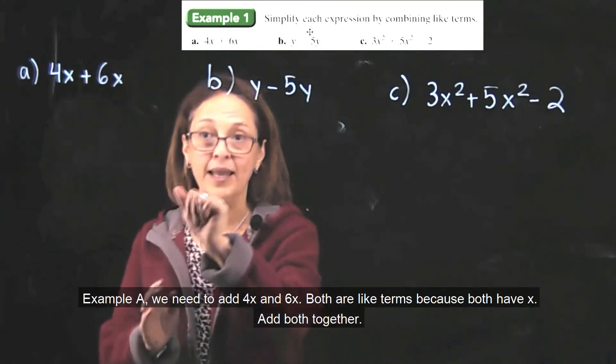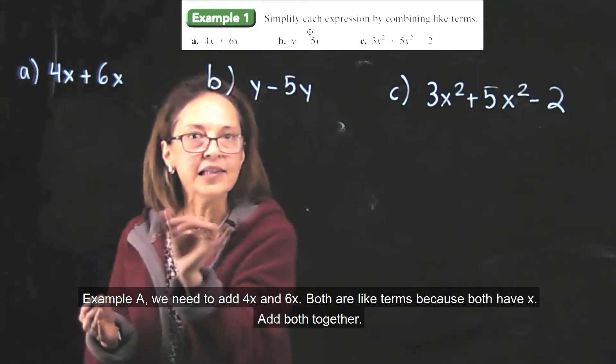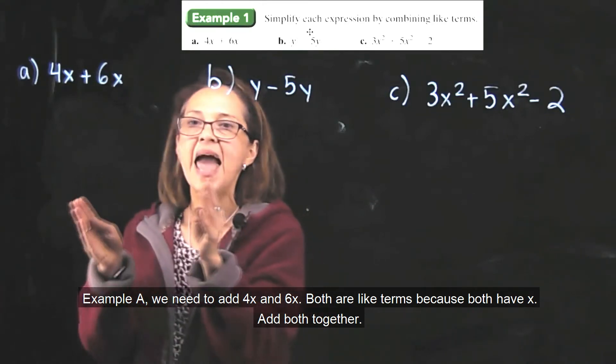Example a: We have to add 4x and 6x. Both are like terms. Why? Both have x. Then add them together.